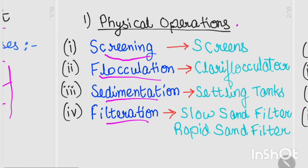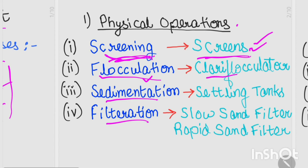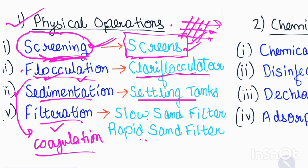For screening, we use equipment called screens. For flocculation, the equipment used is a clariflocculator. For sedimentation, we use sedimentation or settling tanks. For filtration, slow sand or rapid sand filters are used. These are the four physical processes, step by step.